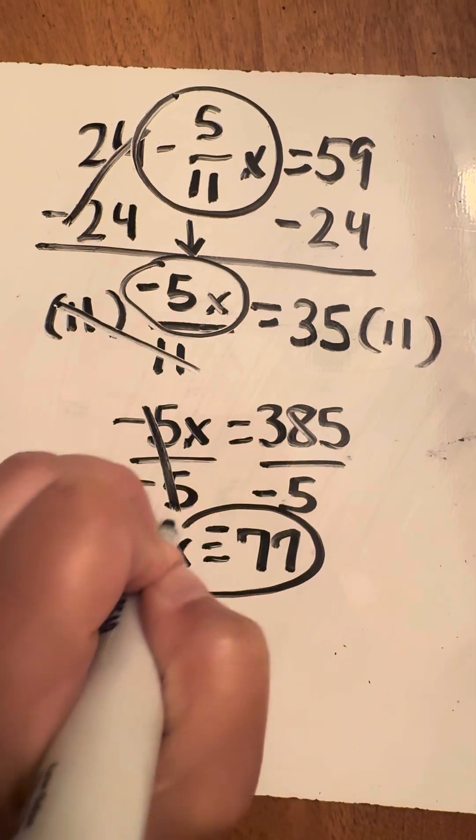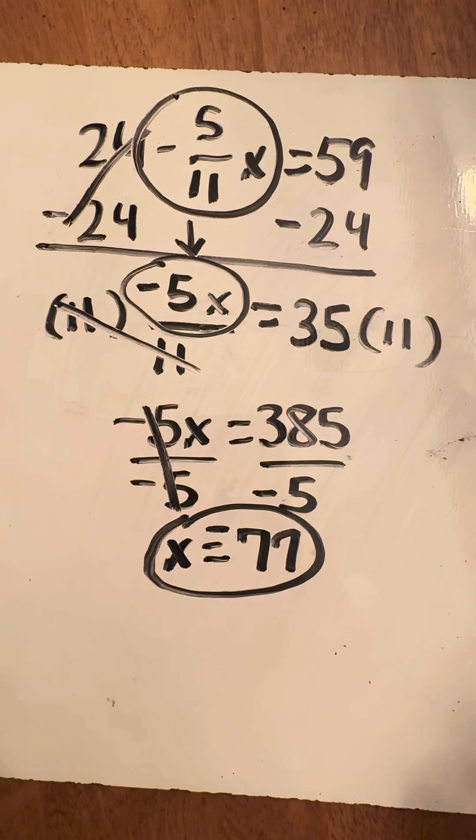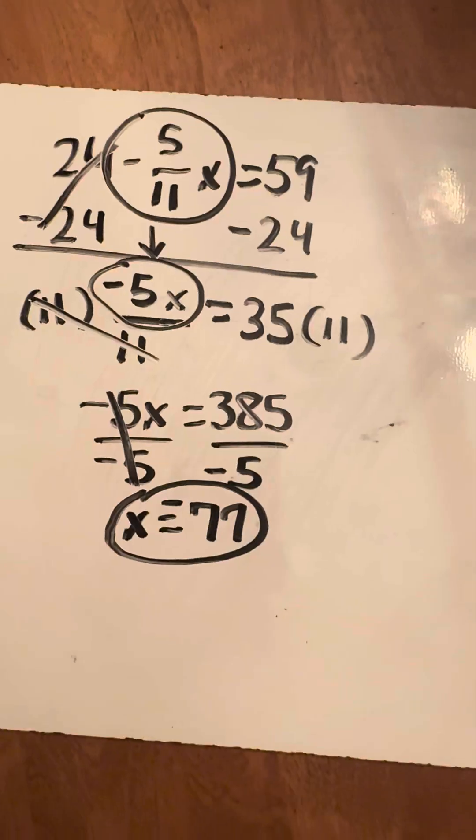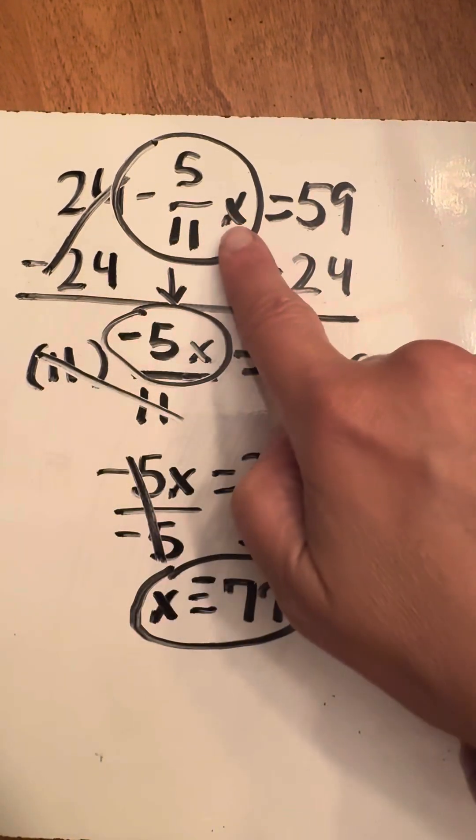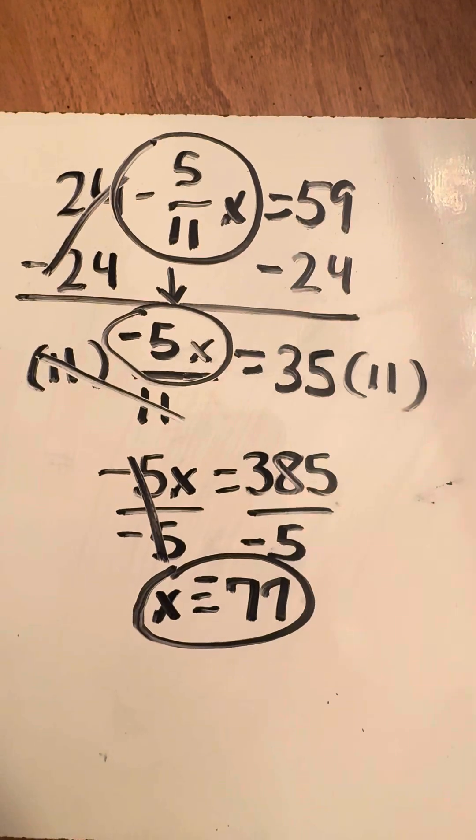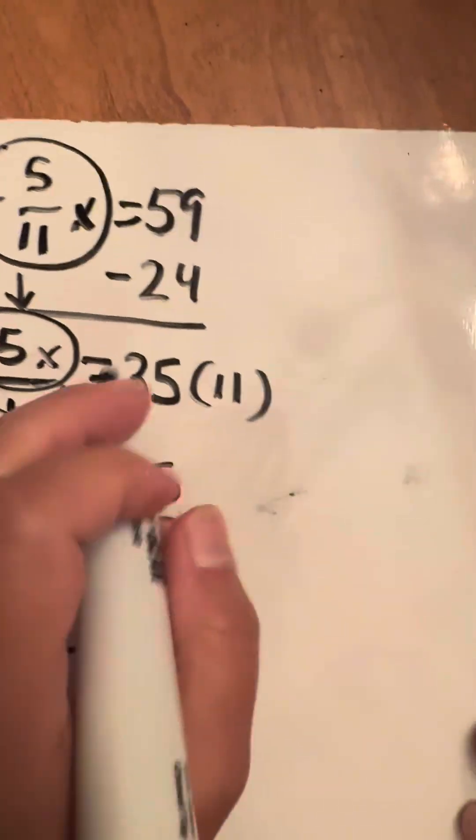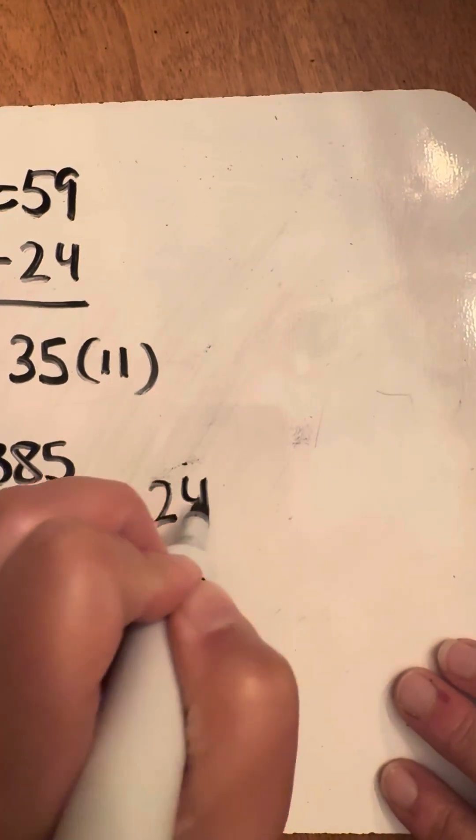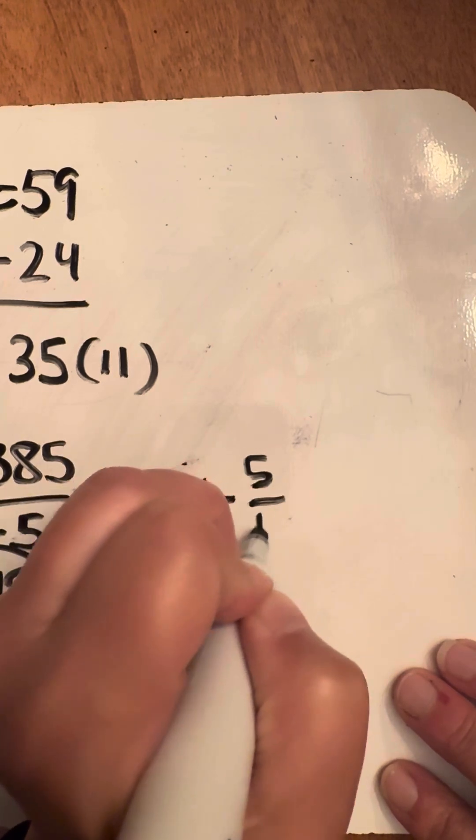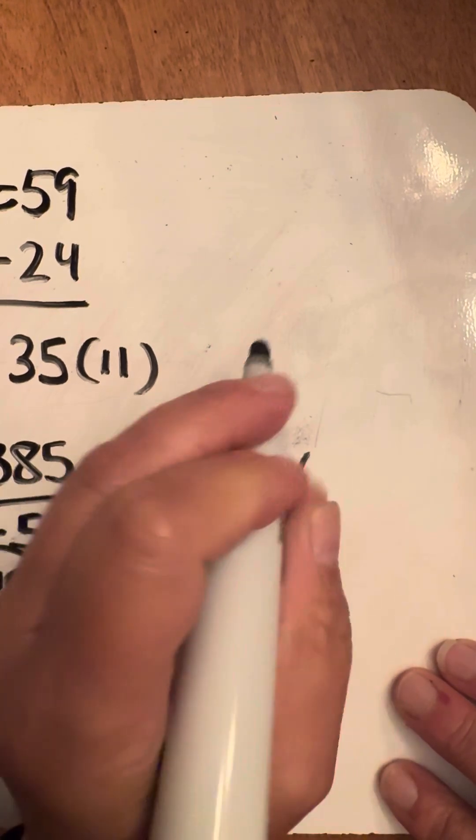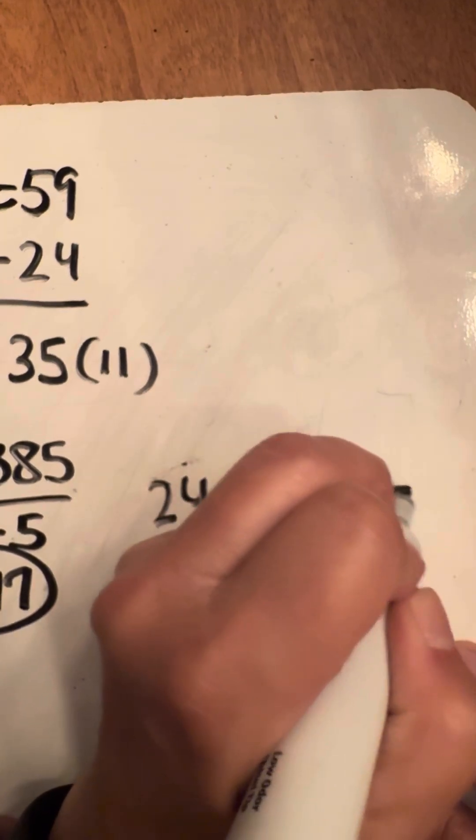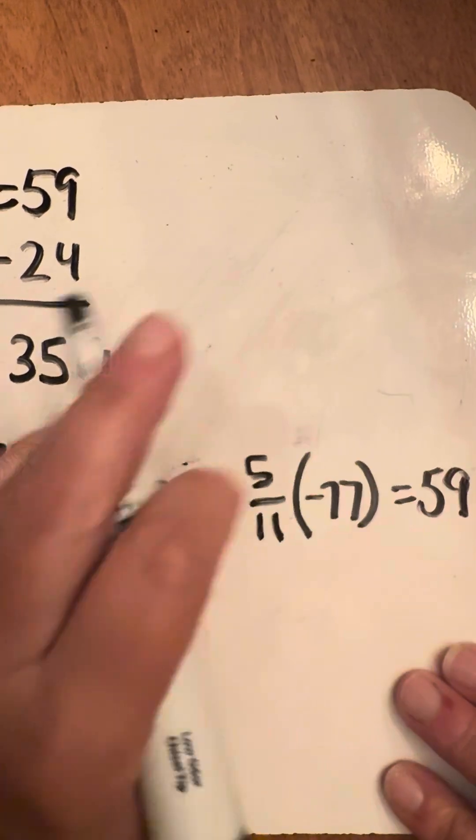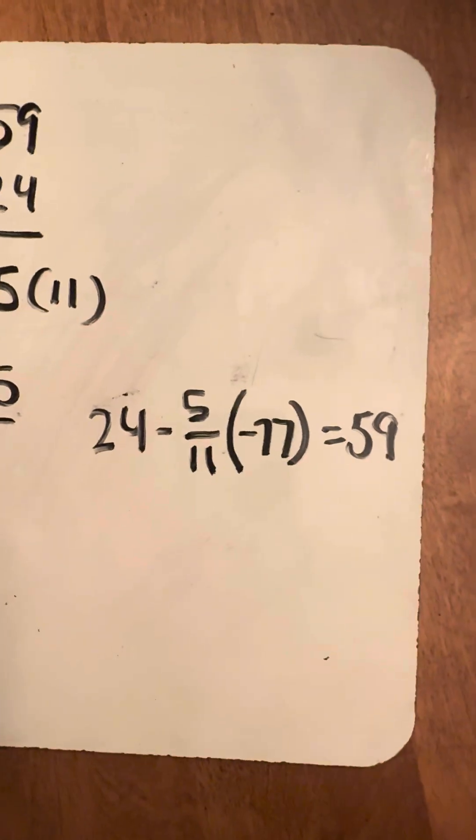So that should be my answer. Now, I just want to go back and double check everything. So you're going to go back up here to this original and plug in right here, negative 77 into that equation. So I'm going to write it over here, 24 minus 5/11ths. I'm going to put the negative 77 there.